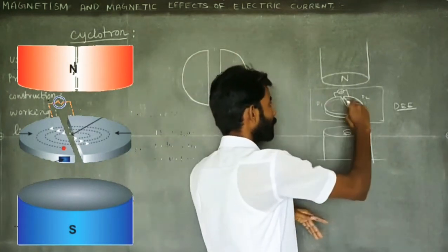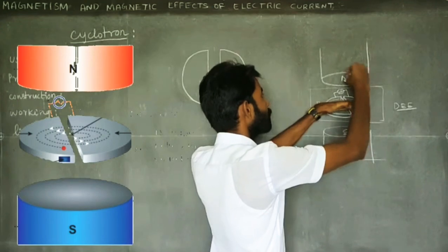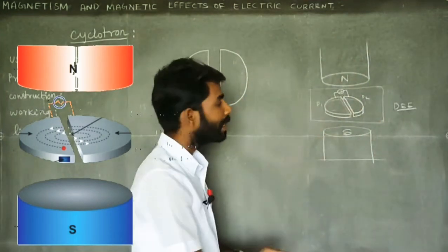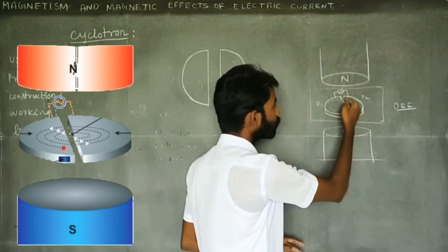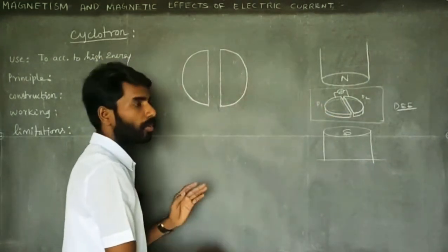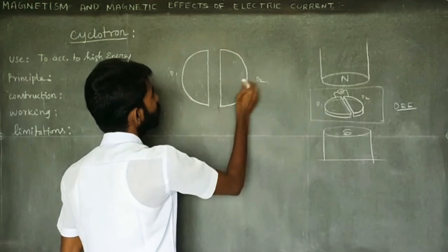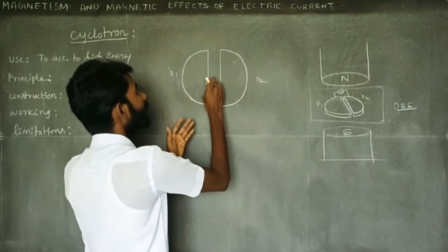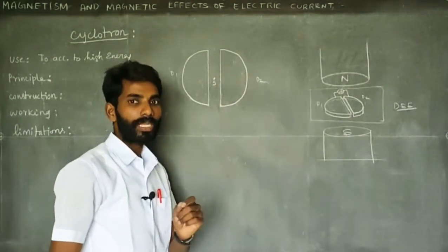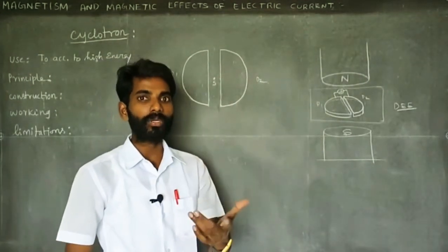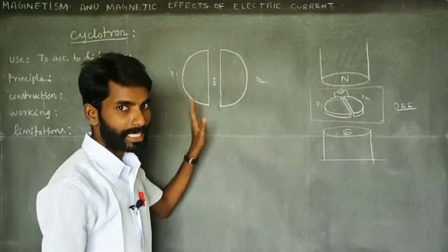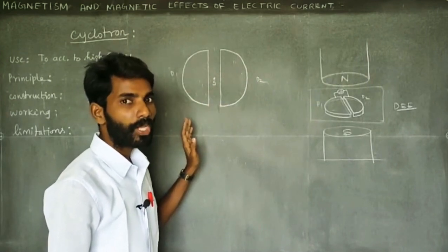So this is a plane. There is a magnetic field. So this is a plane — there is a gap. We can see how we separate it. There is D1 and D2 with a gap between them. In this gap, the charger is accelerated. S is the source of the positive ions.